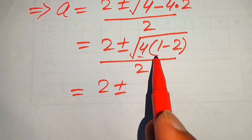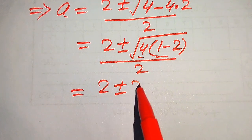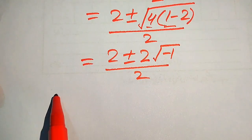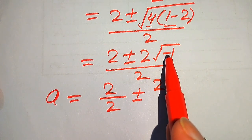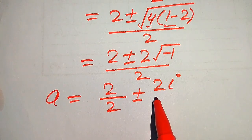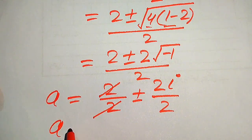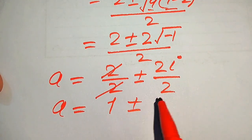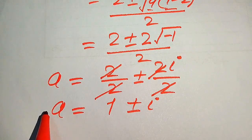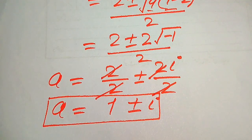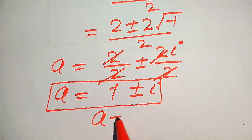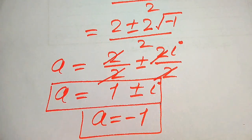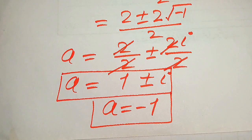Applying the square root separately: square root of four is two, and we get square root of minus one, divided by two. Breaking the fraction: two over two plus or minus two times square root of minus one divided by two. Since square root of minus one equals iota (i), the twos cancel, giving a equals one plus or minus i. So the three roots of the equation are a equals minus one (the real root) and a equals one plus i, one minus i (two complex roots). Thank you for watching — please subscribe for more videos.